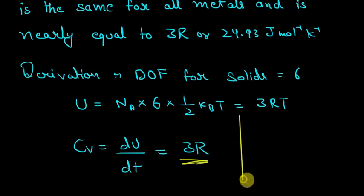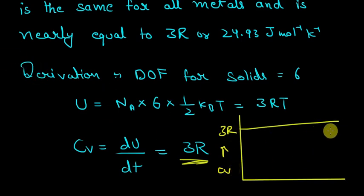So now it also has some limitation. Let's say this is 3R and this is Cv. Now for low temperature, the experimental Cv is something like this. So this law doesn't hold for low temperature. This is its limitation.